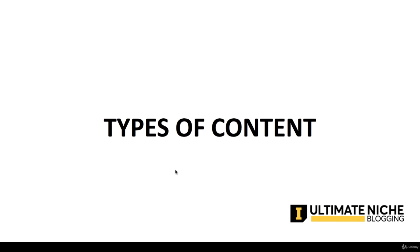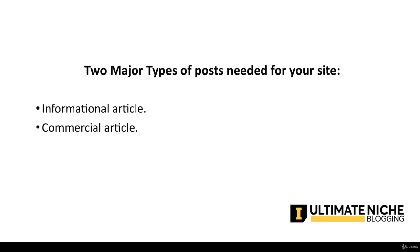Hello and welcome to another exciting lecture. In this lecture we will discuss the types of contents. There are several types of contents, but the major tools which we use for Amazon affiliate blogging: one is an informational article and the second one is a commercial article. An informational article is an article in which how, why, what, when type of content is provided.